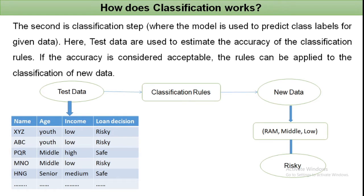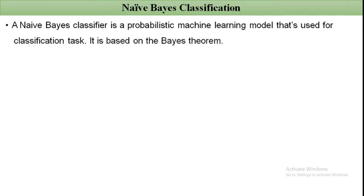For the test data, we check the accuracy of the model. If accuracy is satisfactory, new data is given to the model. For example, if a person named Ram has middle-age class and low income, the output will be 'risky' according to the classification rules. In this way, classification works.